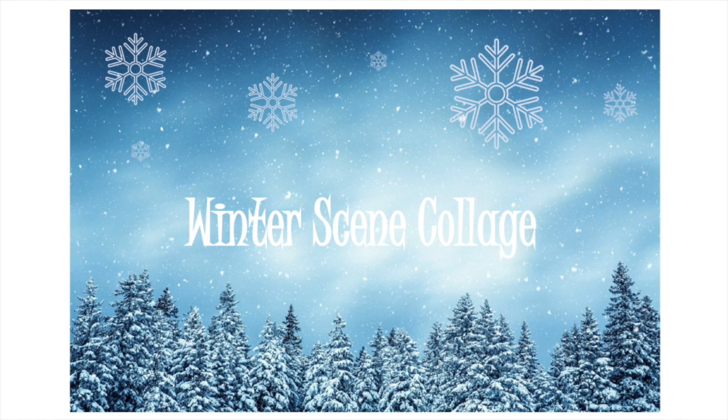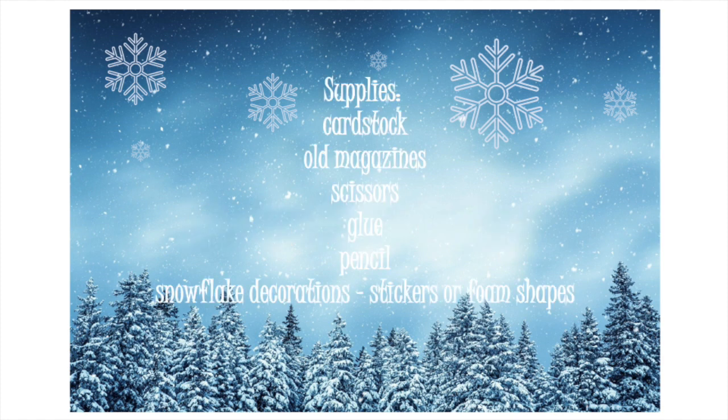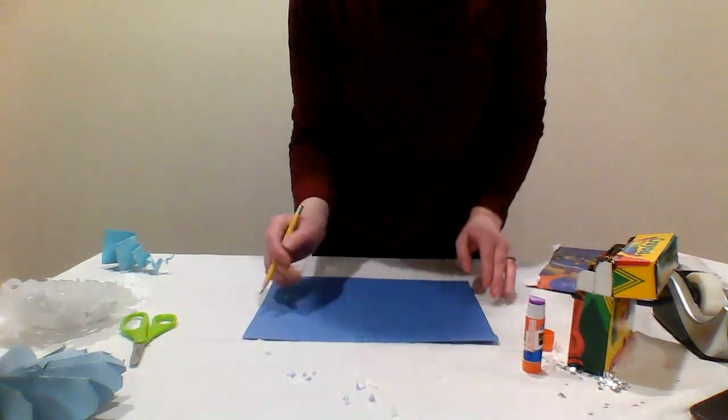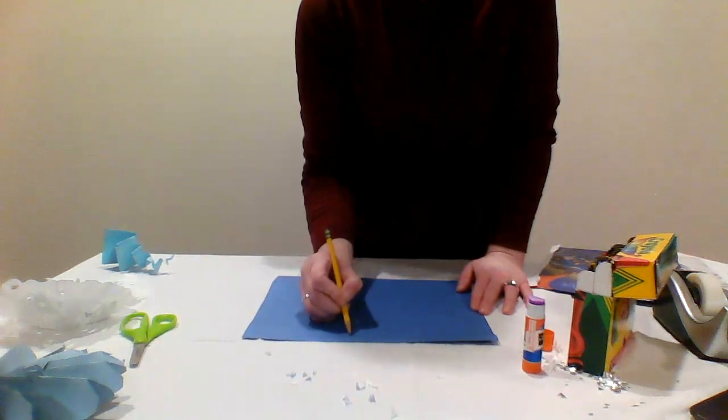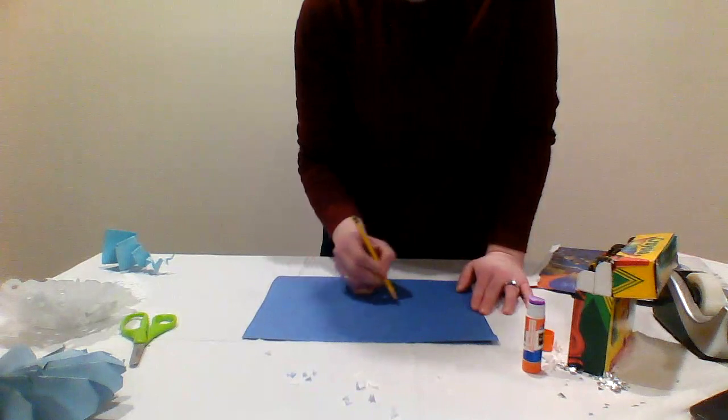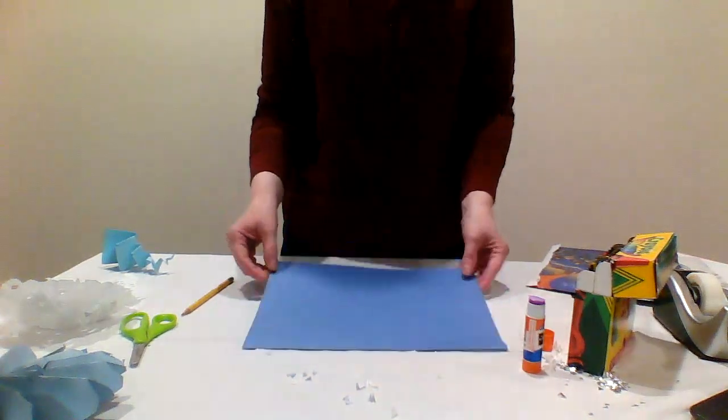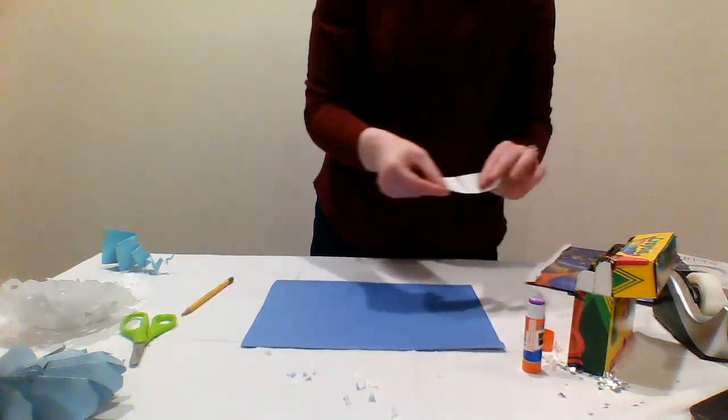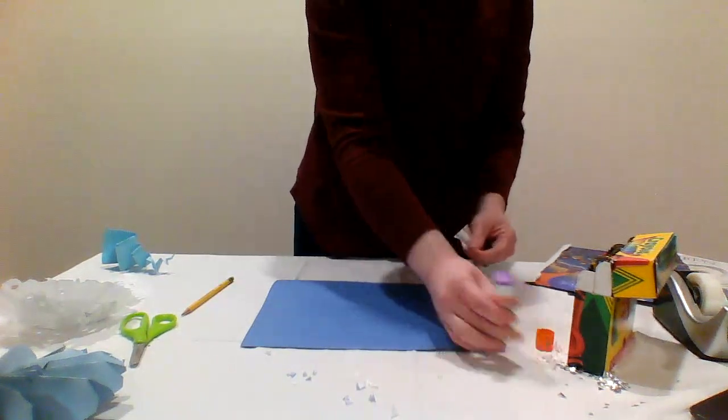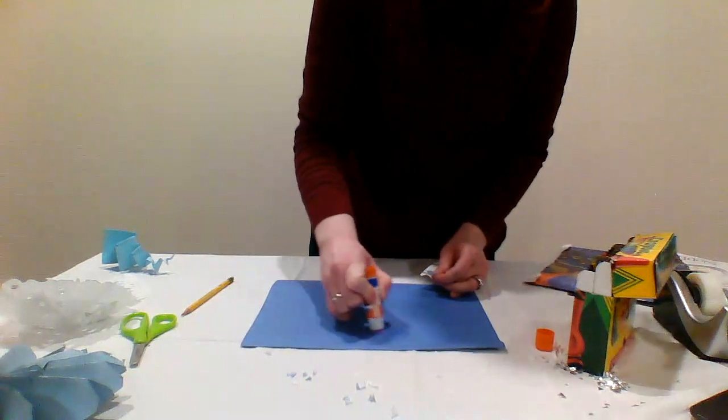Our sixth and final craft today is a winter paper collage. For this craft, you will need a piece of cardstock or paper, some old magazines or leftover pieces of construction paper in assorted colors, scissors, glue, a pencil, and some snowflake decorations, like stickers or foam shapes. On your piece of cardstock or paper, draw a winter scene. For example, a giant snowflake or a snowman or a snowy forest. Then using pieces of old magazines or leftover construction paper, glue them onto your paper to fill in the objects in your winter scene.